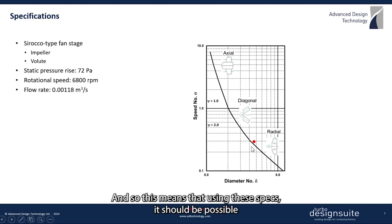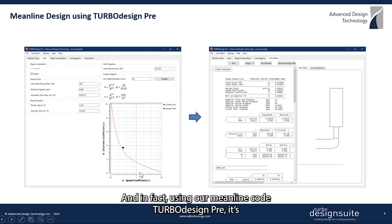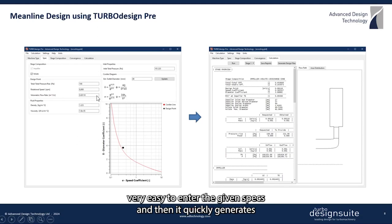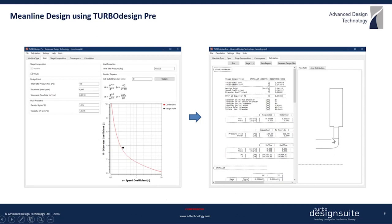This means that using these specs it should be possible to design a high-performing fan stage. Using our mainline code TurboDesign Free, it's very easy to enter the given specs, and it quickly generates the meridional shape of the CPU cooling fan in less than a second.